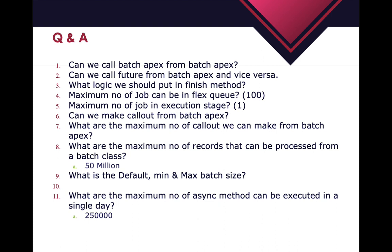Fourth question: what is the maximum number of jobs that can be placed in the Flex Queue? The maximum is 100 jobs in Holding state. If a user tries to execute another Batch Apex when the Flex Queue is at full capacity, the Batch Apex will immediately fail and go to the Failed state. Fifth question: what is the maximum number of jobs in the execution stage? There can be only one job in the Processing stage at a time.